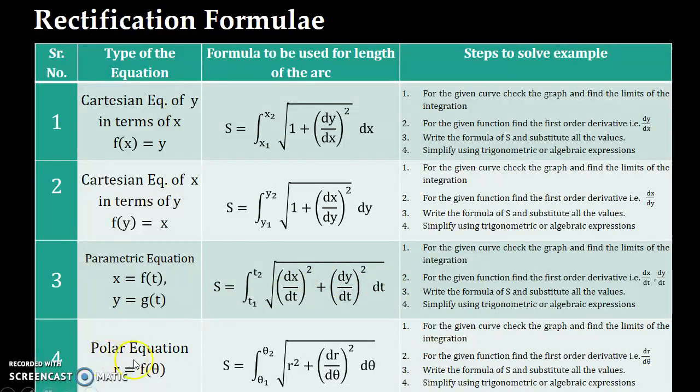And then the last is polar equation. So whenever your equation or the graph is given in terms of a polar equation, say r equal to f of theta, and the range of the arc length is between theta 1 to theta 2. Please remember that theta 1 and theta 2 are angles. So their range, whenever I talk about range, actually it sweeps the angle from theta 1 to theta 2.